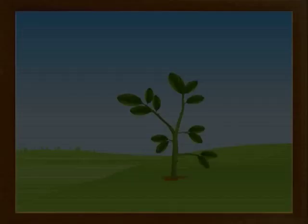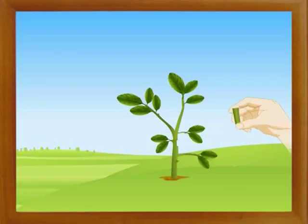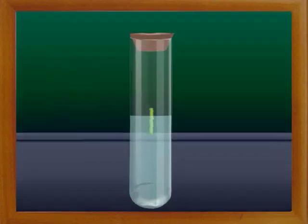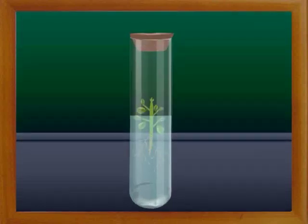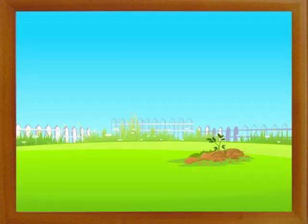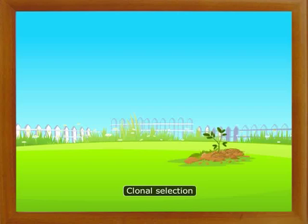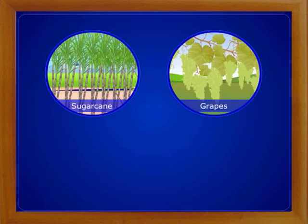Cloning is a method of vegetative propagation. By cloning, one can produce an exact genetic copy of the source. Small tissues from a plant are taken and placed in a test tube with nutrients. The tissue grows roots and stem in the test tube and is then transplanted into the field to grow. This method of selection is possible only in vegetatively propagating crops like sugarcane, grapes, mango, etc.